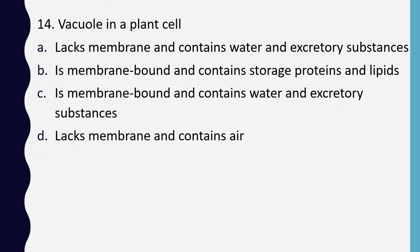Question 14. Vacuole in a plant cell — option A: lacks membrane and contains water and excretory substances; option B: is membrane bound and contains storage proteins and lipids; option C: is membrane bound and contains water and excretory substances; option D: lacks membrane and contains air. Correct answer is option C: is membrane bound and contains water and excretory substances.